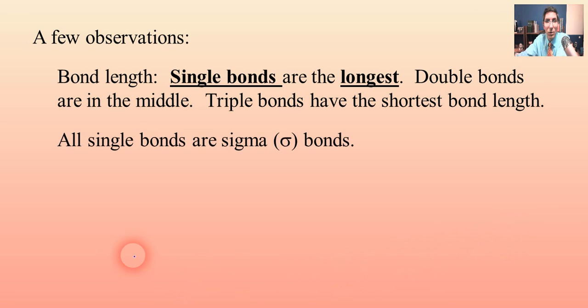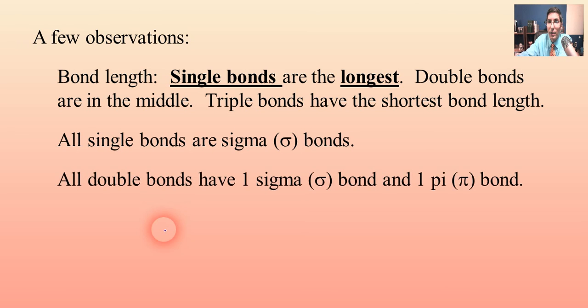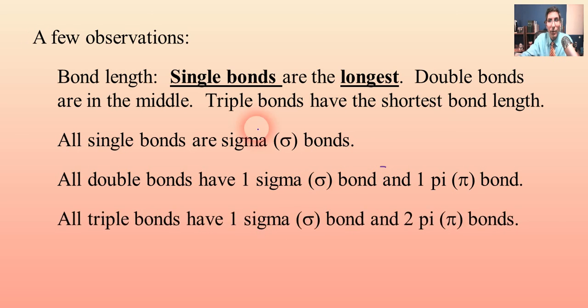Whenever we see a single bond, every single bond is a sigma bond. We'll do some examples here in a minute so we can practice. If you ever see a double bond, it's one sigma and one pi bond. So that's every single time you have a double bond. Lastly, when you see a triple bond, those have one sigma bond and two pi bonds. So anytime you see a triple, that's what it is.